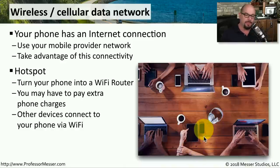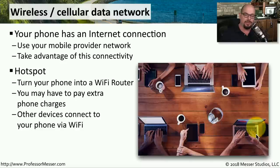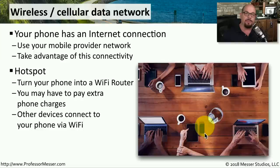You simply turn on the hotspot capabilities on one smartphone, and then everybody else who's on that 802.11 wireless network can now use your phone to get internet access. This functionality and the amount of data you're able to use over this connection is often managed by your wireless service provider, so make sure you check with them before enabling this capability.